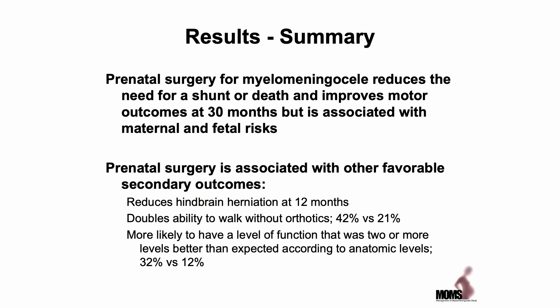The results from the MOM study are that prenatal surgery for myelomeningocele reduces the need for a shunt or death and improves motor function at 30 months, but there are clear maternal and fetal risks. There are also other favorable secondary outcomes, including reduced hindbrain herniation. The number of patients able to walk with orthotics was doubled from 21% to 42%, and more were likely to have a level of function two or more levels better than expected — 32% versus 12%. Some of these improvements may be related to the fact that chronic exposure of the placode to amniotic fluid may result in delayed deterioration of placode function.